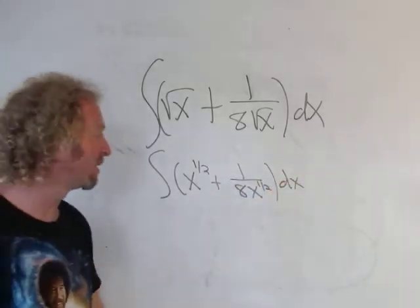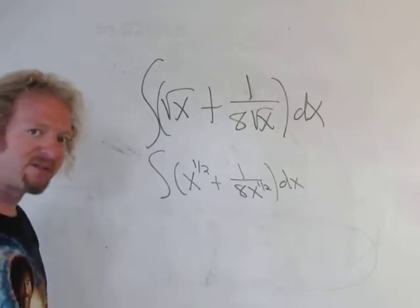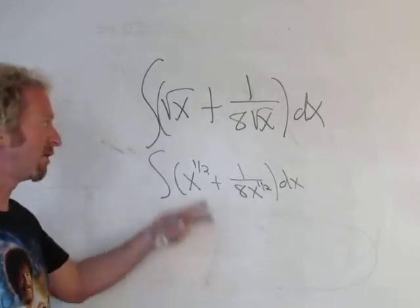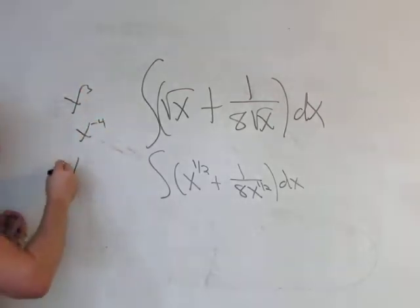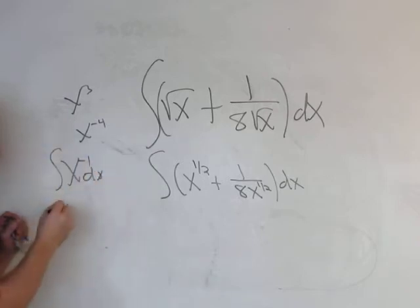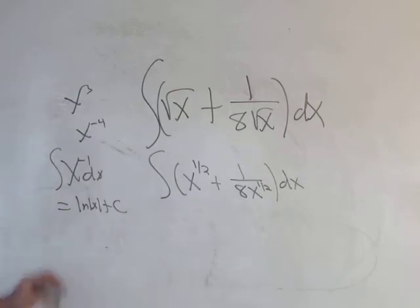The dx tells us what the variable is. Before we integrate this, everything has to be like x to a power, in other words, like x cubed or x to the negative 4. We can't have x to the negative 1, that's going to give us something else which we'll do later. That's an absolute value of x. If you're watching this video, you probably haven't learned that yet.